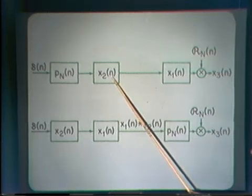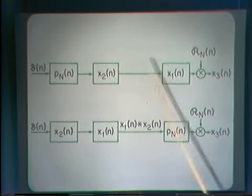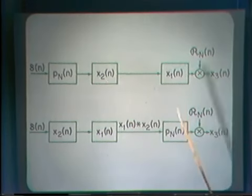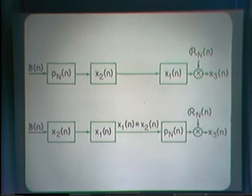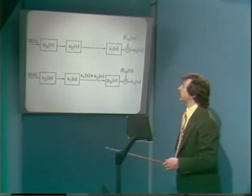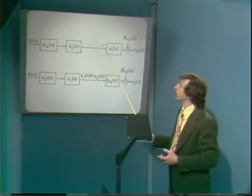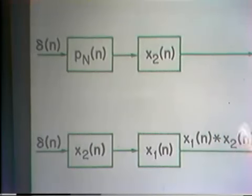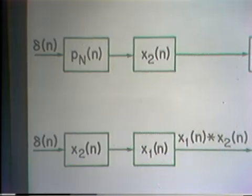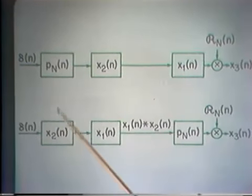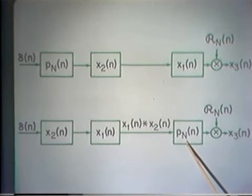We have then the cascade of three linear shift-invariant systems to generate the circular convolution x3[n] of x1[n] and x2[n]. One of the important things we know about cascaded linear shift-invariant systems is that the order in which they're cascaded is irrelevant — something shown in one of the early lectures. So we can interchange the order of these systems. In particular, let's move the pulse-train-generating system to the end of the cascade, so instead we have x2[n] cascaded with x1[n], cascaded with p_N[n].